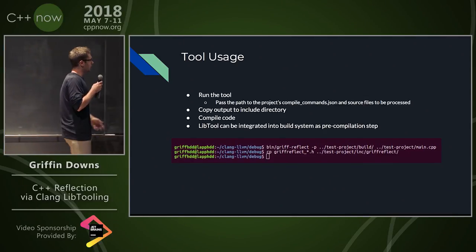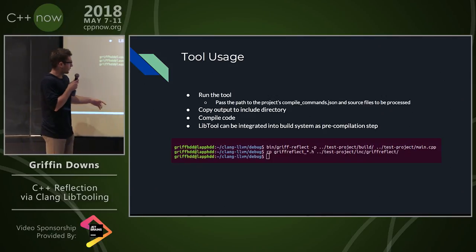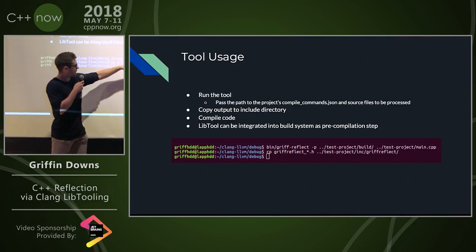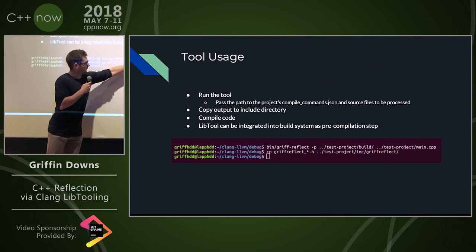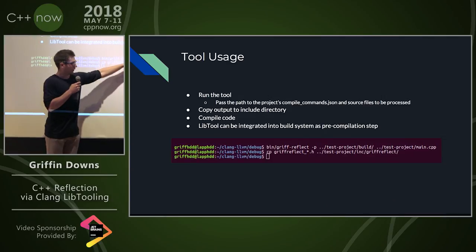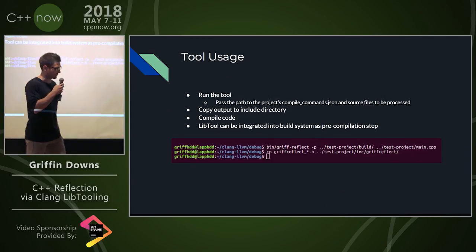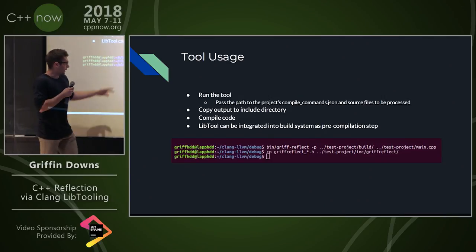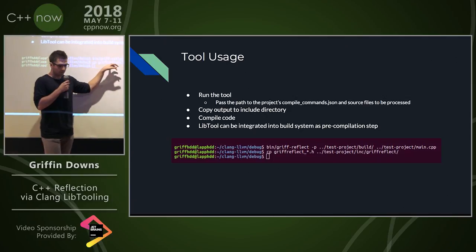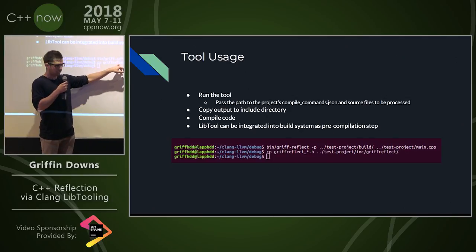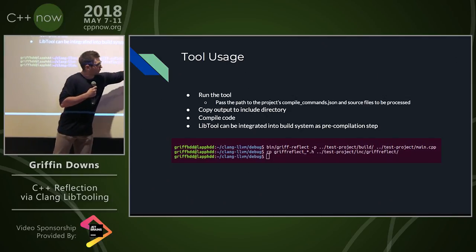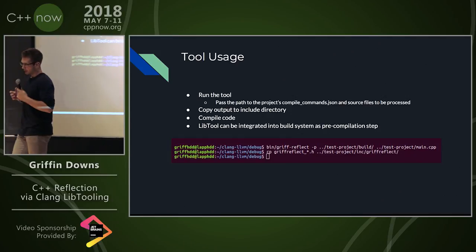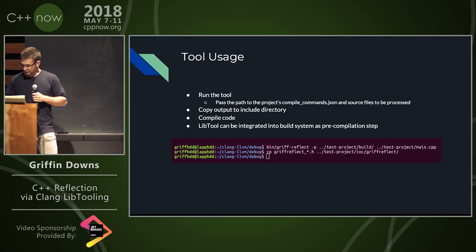As far as running the tool, what we have to do is just take the tool, pass it the directory to our compile commands as well as whatever files we want to process. Then it generates all of the header files, which can then just be included directly into our project — this would go at the top of the file.